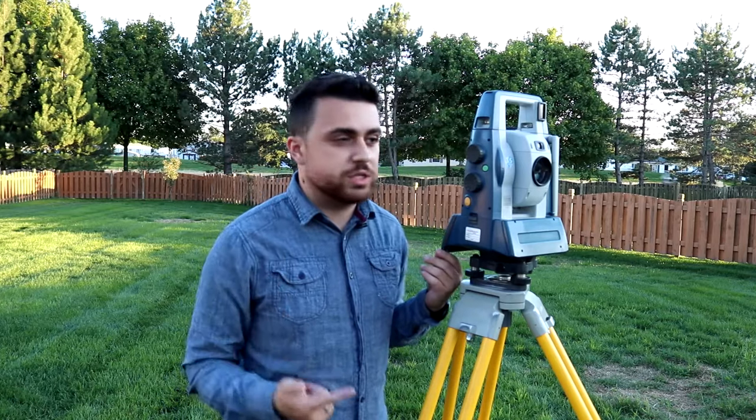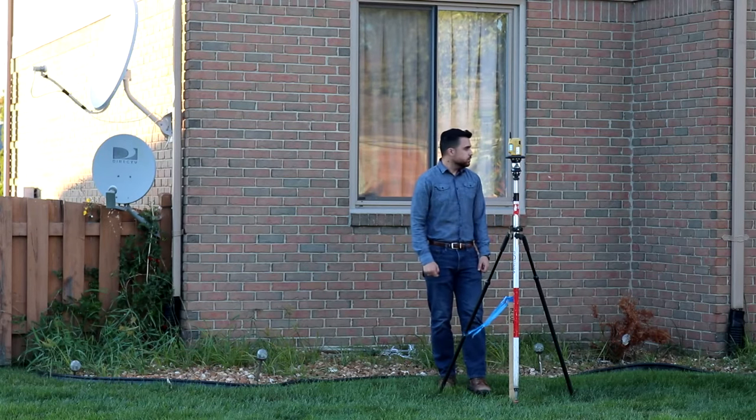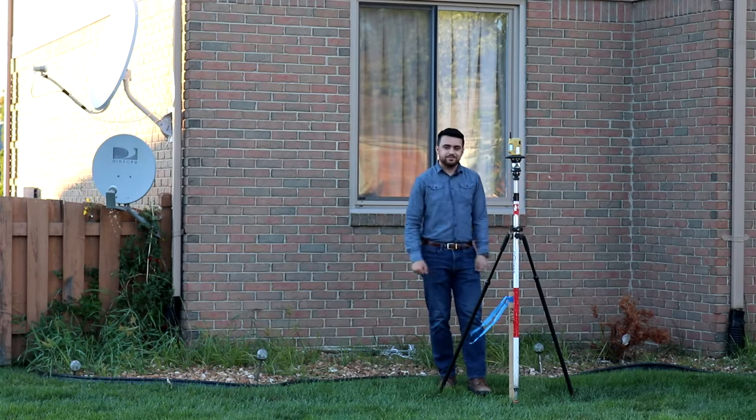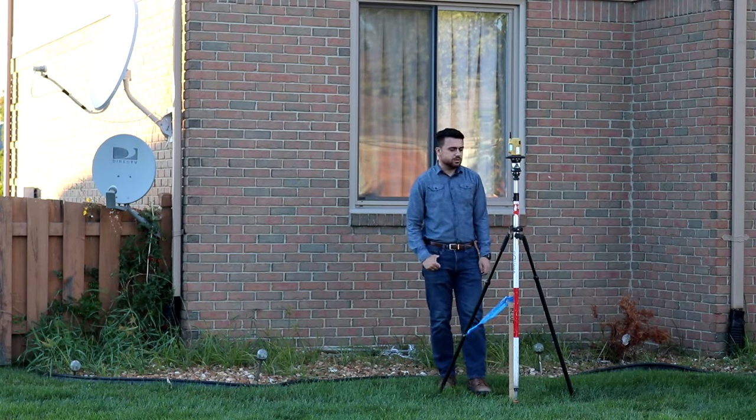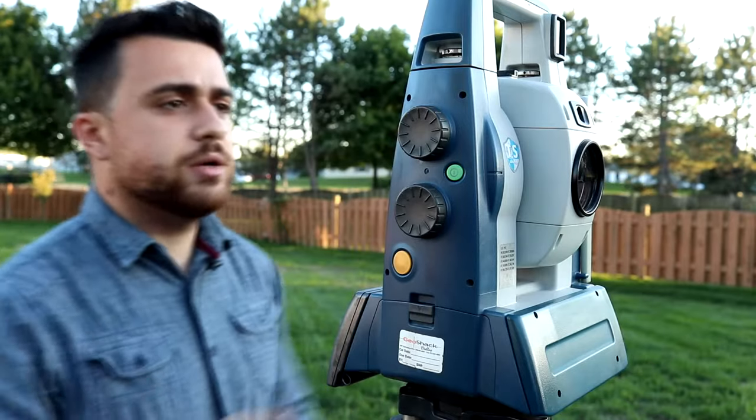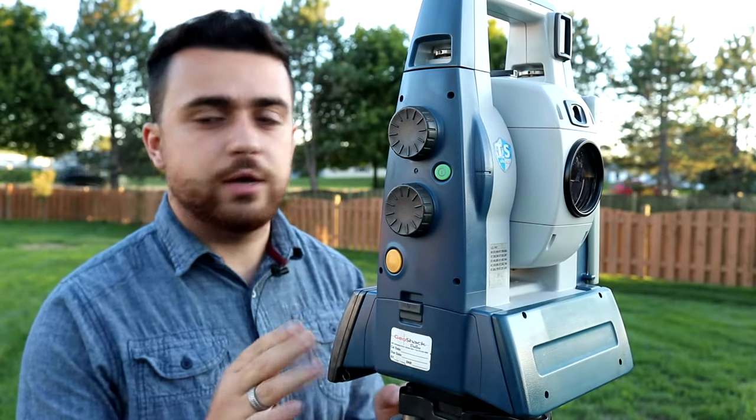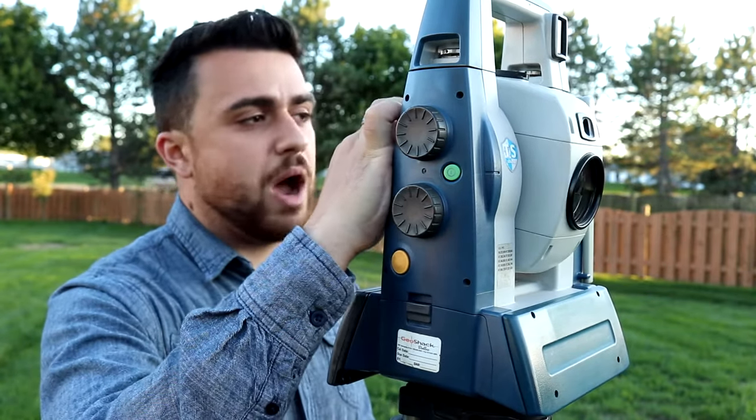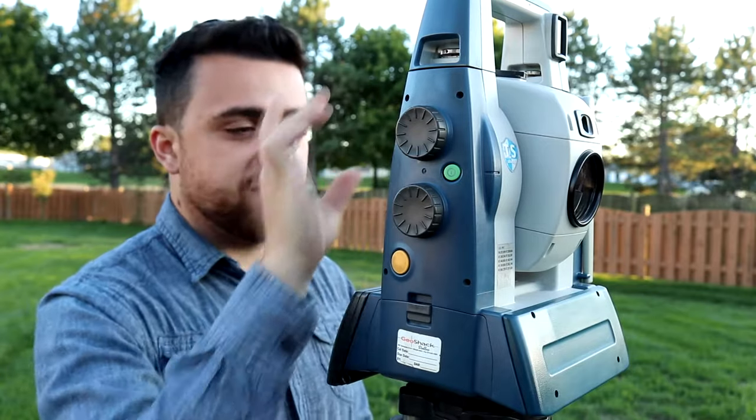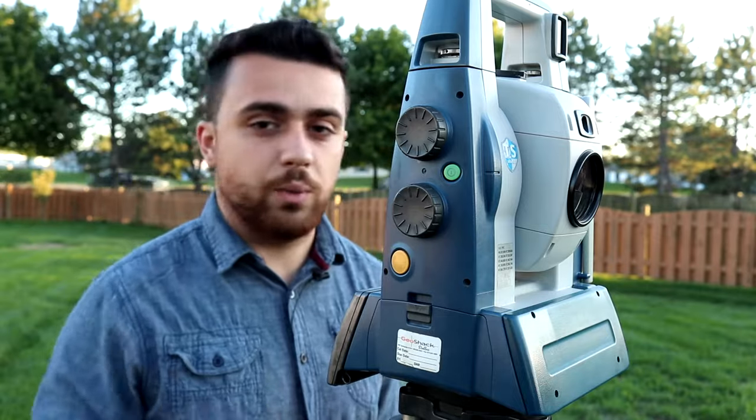Now I'm going to show you how to use this total station to sight points from the prism. Now the prism is located at a further distance away from our total station. What we need to do is sight the total station to look directly at the prism and then capture the location difference between where we're set up and where the prism is located. To do that, you're going to position the total station pointed in the direction of the rod. Then you're going to tilt the optics up and down to find the exact location. And you look through the optics to see exactly where the prism is on the rod.